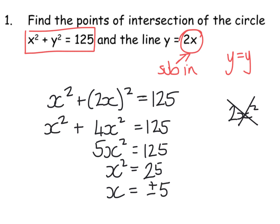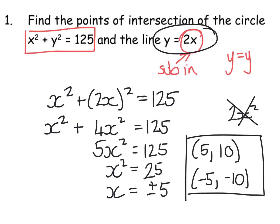And then what you do is to get the other two parts of the coordinate, you go back to the straight line and replace x with 5. So my two points of intersection are: if you take the positive 5 and replace into my straight line here, 2 times 5 is 10. So one of the points is (5, 10). For the other one, -5, when you sub that in, 2 times -5 is -10. So there are your two points of intersection.